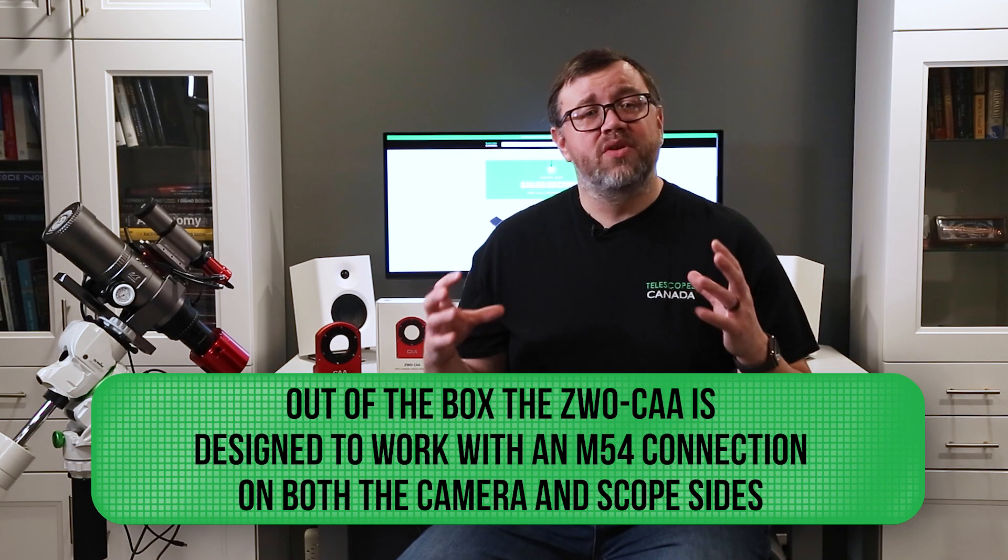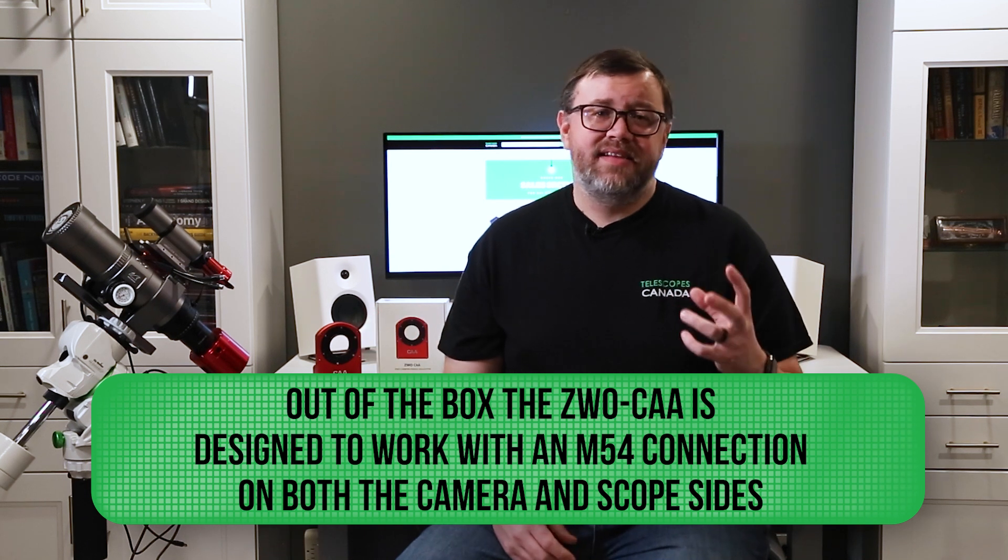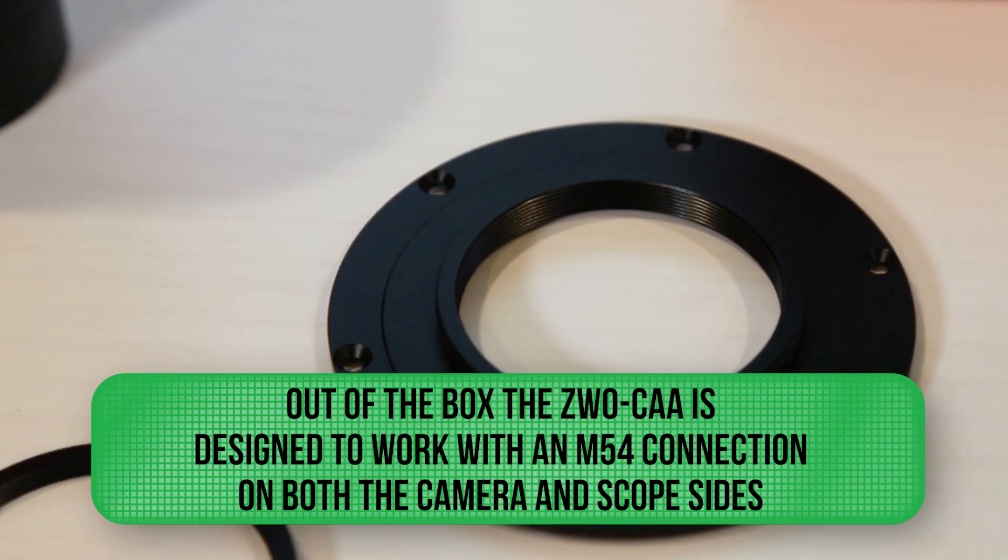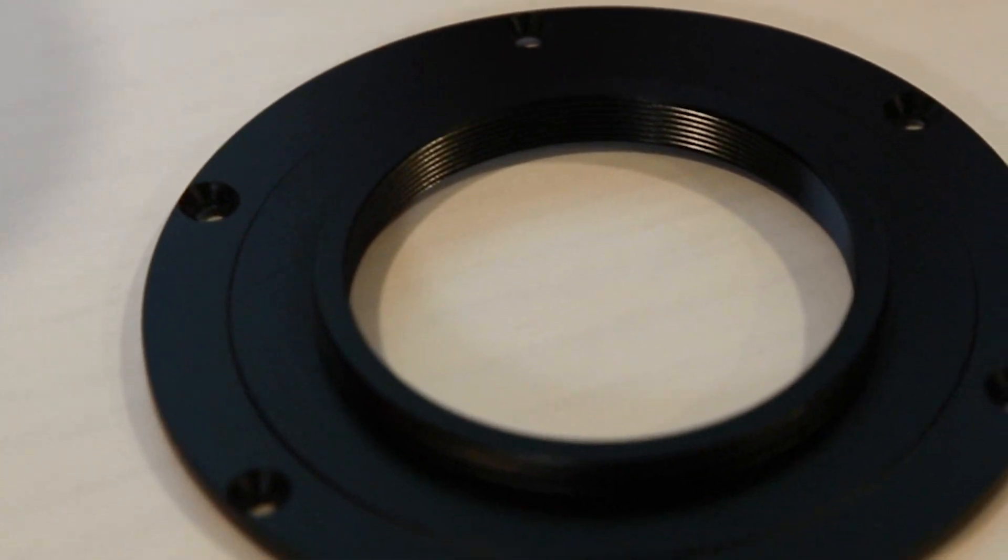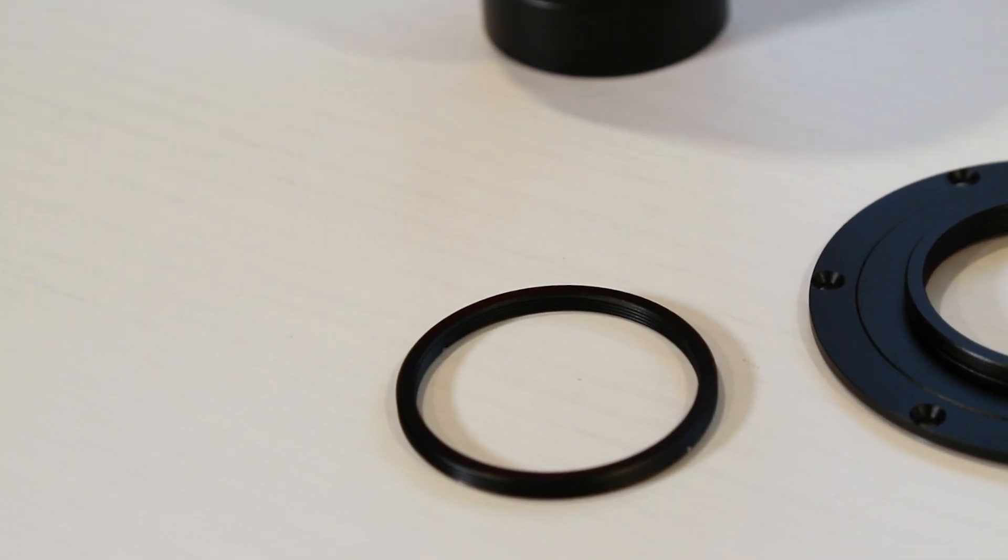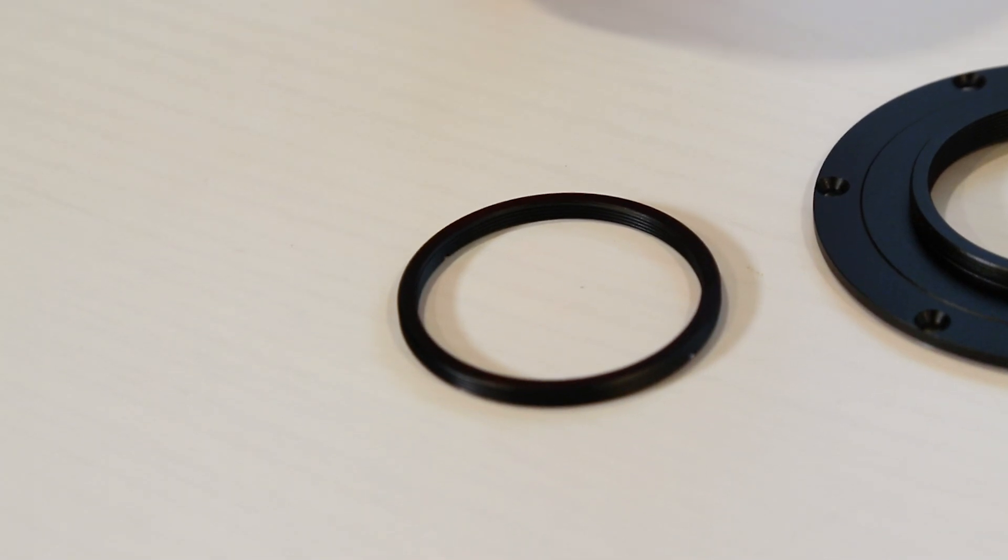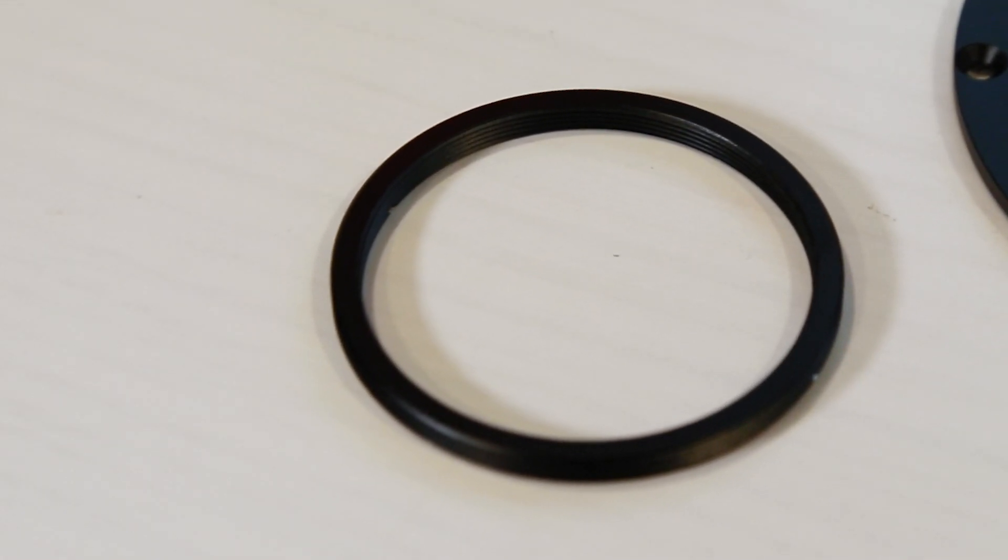Out of the box, it's designed to work with an M54 connection on both the camera side and the telescope side. ZWO does provide an adapter, a plate that you can change the M54 on the camera side to M48. Additionally, if you want to bring the telescope side down to M48, you will have to purchase an additional adapter from ZWO.